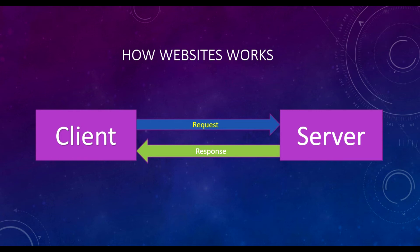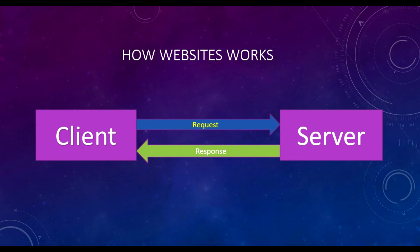So how does this website work? You log into your Facebook account, go to your home page or profile page, and you send a request to the Facebook server, which is sitting somewhere else and contains all your photos and videos. You ask the server for a photo or video you want to see. The server then verifies whether you are an authenticated user, and if everything is fine, it sends the images and videos back to your browser — your client side.